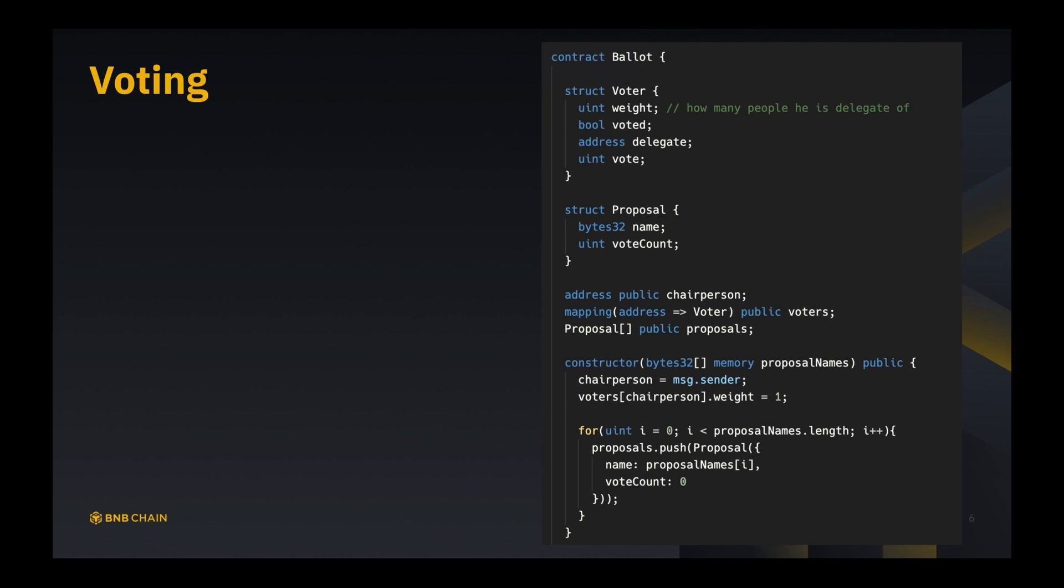Next we look at the voting contract. Again, I will first describe the behavior of the voting contract, and then we will analyze the code in detail. In the voting contract, we will have a chairperson who is the administrator of this whole voting procedure. He will be able to give right to vote to somebody and initialize new voters.